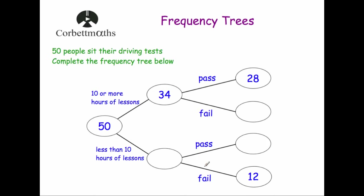First we have the 50 people, and we know that 34 of them have taken 10 or more hours of driving lessons. That means the other 16 people — because 50 minus 34 equals 16 — have taken less than 10 hours of driving lessons.